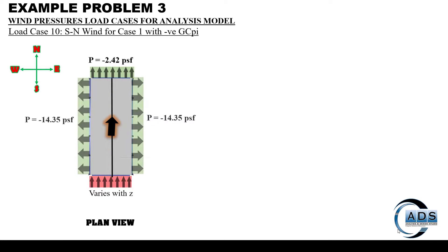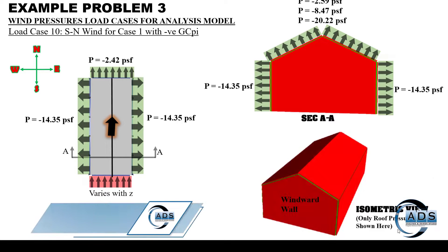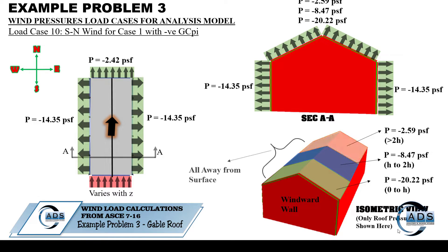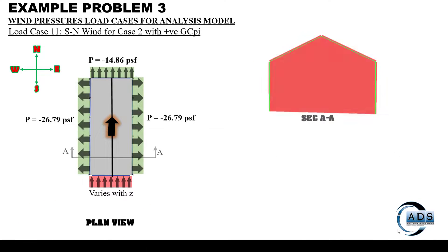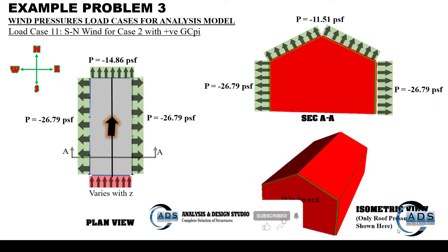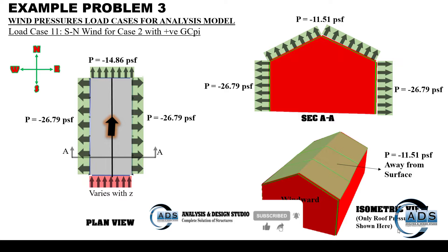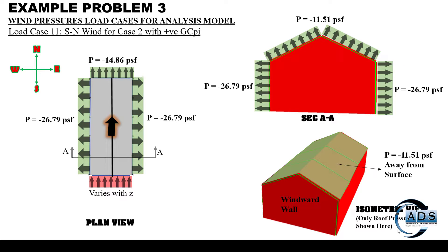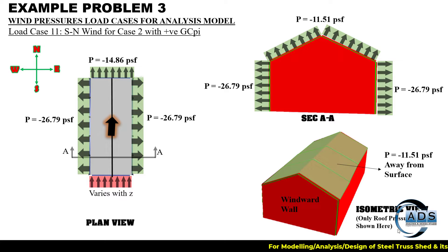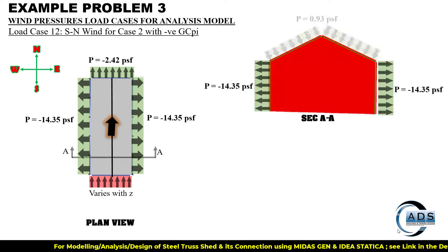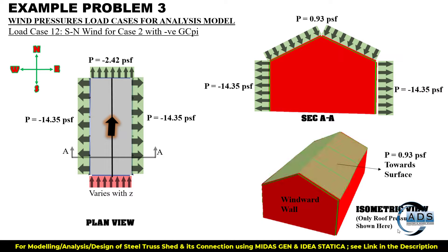Load case 10 follows. For load case 11, the roof has uniform pressure because case 2 has a uniform Cp value not dependent on regions. Similarly, load case 12 with the negative GCpi shows the roof pressure is towards the surface because it has a positive magnitude.